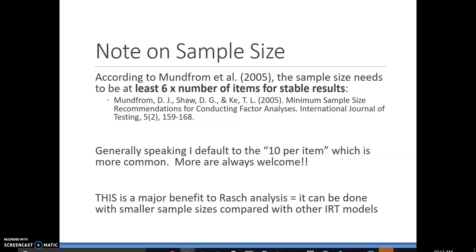First, a quick note on sample size. The absolute 100% minimum sample size is 6 per item, but generally we default to at least 10 per item. So if you have 10 items, you would need 100 people. If you had 10 items you need at least 60 people, and of course more is always better. This is a huge benefit to Rasch analysis specifically because we can do really cool analyses with smaller sample sizes, especially compared to the other IRT models. Once you get into 2-parameter and 3-parameter, you need thousands of people.